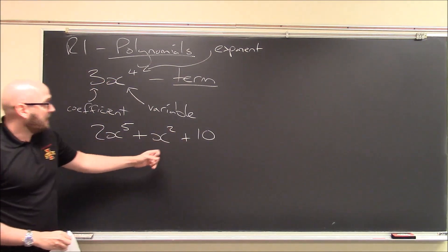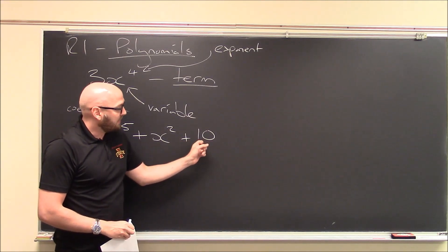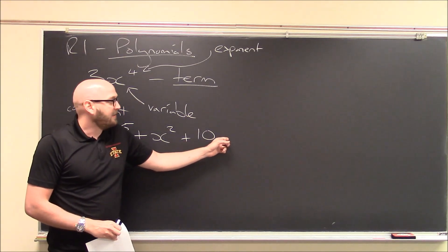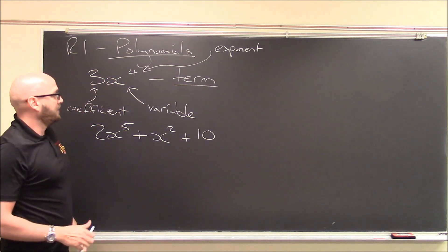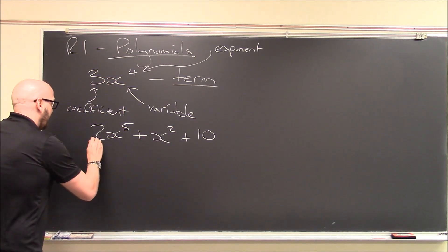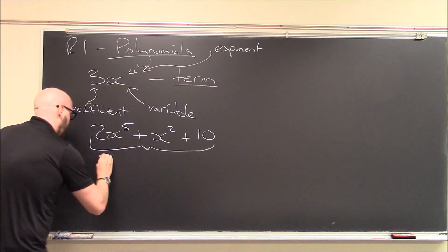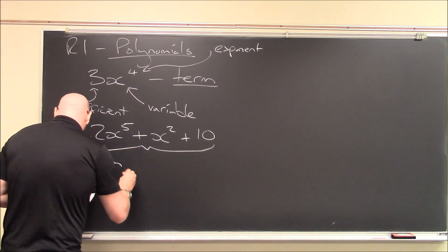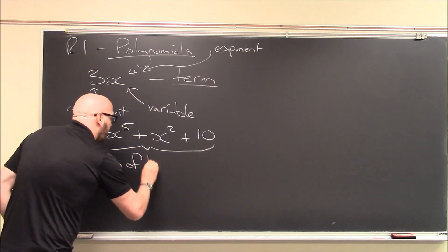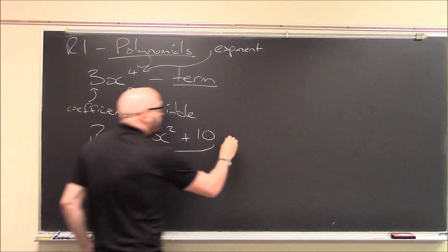There's a term. I'm going to add to it x squared, and I'm going to add to this plus 10. All right, so all of these are terms. Even this one, 10, you can think of this as 10 times 1 or 10 times x to the 0. So technically, that's a term, too. And a sum of a whole bunch of terms, so sum of terms is a polynomial.